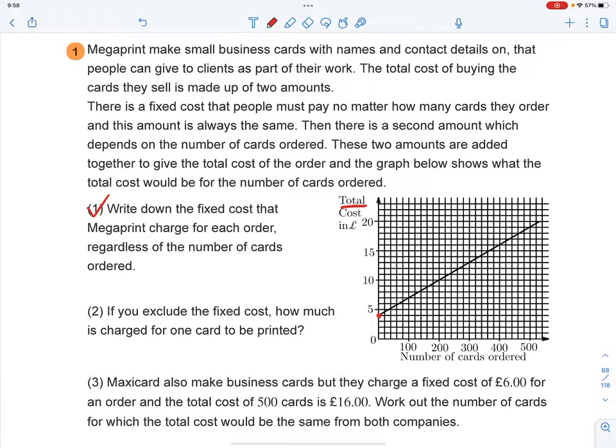And you will see the total cost in pounds. So that means, even though you don't have any number of cards ordered, you still need to pay four pounds to it. That would be the fixed charge. So four pounds will be the answer to the first question.